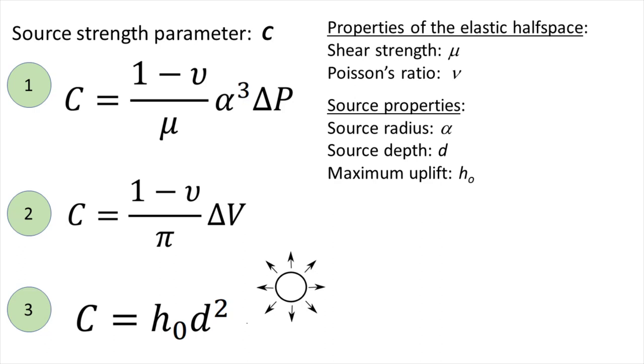Equation number 3 is another equally valid expression. It shows that the source strength equals the product of maximum surface displacement directly above the source denoted by h subscript 0 times the depth to the source squared. This equation can be used to infer the source strength parameter from surface deformation fields, that can then later be used, for example, together with equation 2 to infer the subsurface volume change.